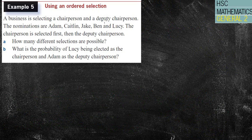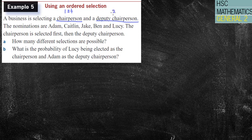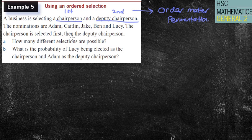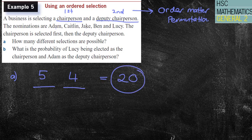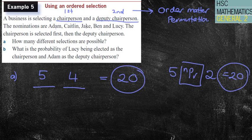A business is selecting a chairperson and a deputy chairperson. That's like having someone coming first and someone coming second. Therefore, automatically, what I'll be thinking about, that order matters. Therefore, this is called a permutation. Now, the nominations are Adam, Caitlin, Jake, Ben, and Lucy. The chairperson is selected first, then the deputy chairperson. How many different combinations are possible? Well, I'd be saying I'm choosing two people. I've got one, two, three, four, five people to choose from. So five people could be the chairperson. Once they are chosen, I have four people left, which gives me 20 combinations in total. Likewise, I could have written in five, and I could have pressed my NPR button, and I'm choosing two people, and that would have given me that 20.